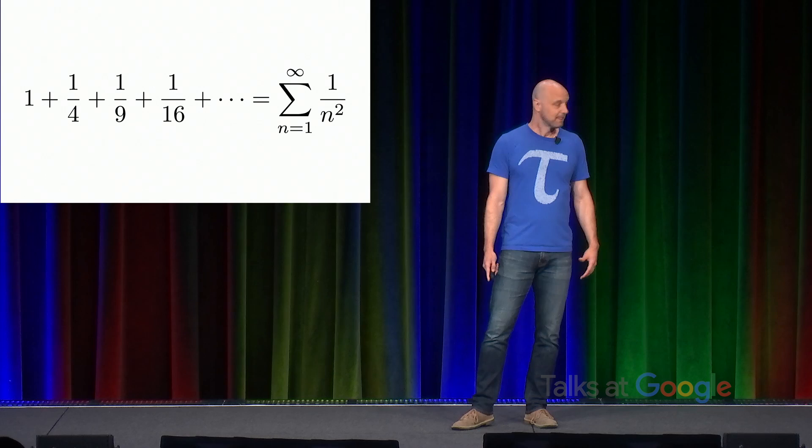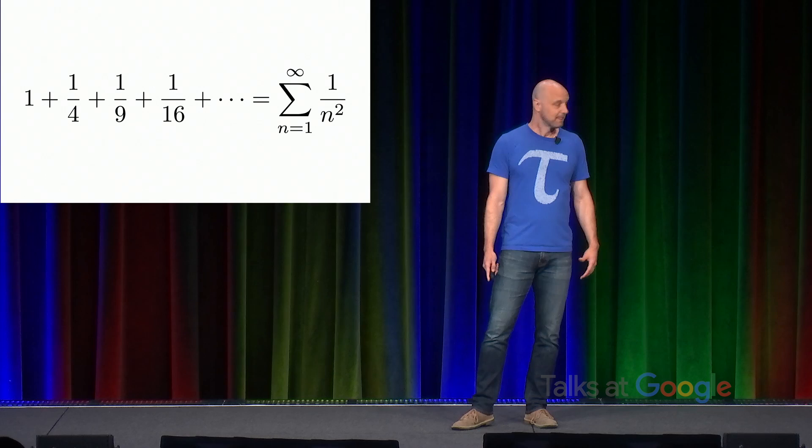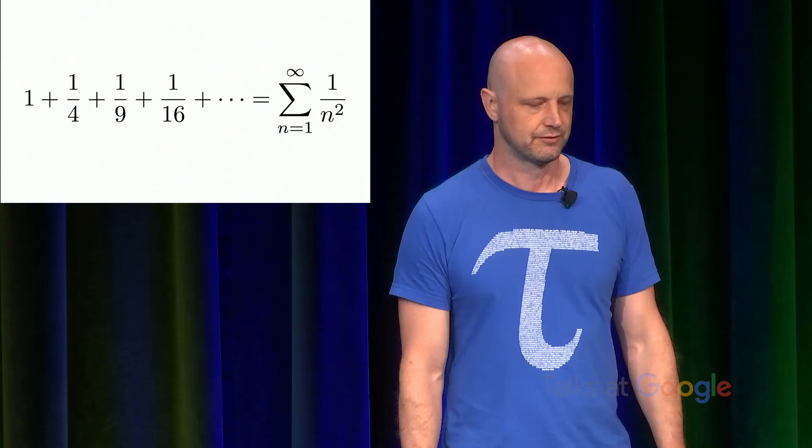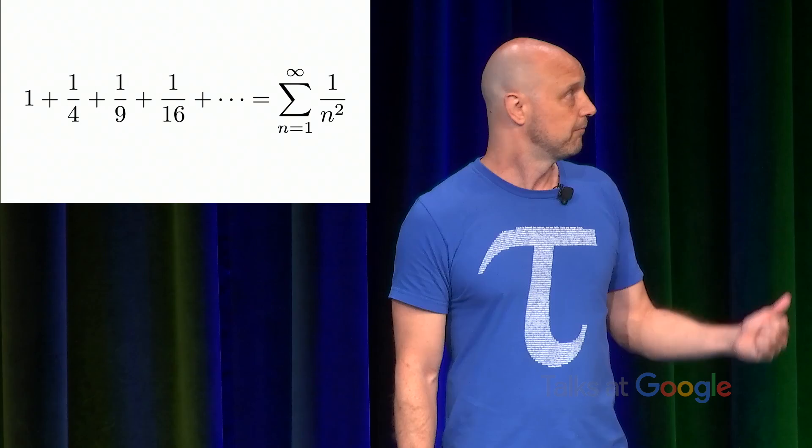This is one of my favorite sums. It's the sum of the inverse squares. 1 plus a 4th plus a 9th plus a 16th and so on. In summation notation, we can write that as the sum as n goes from 1 to infinity of 1 over n squared. This actually has a closed-form solution. Anyone happen to know it? Yeah, this is pi squared over 6.